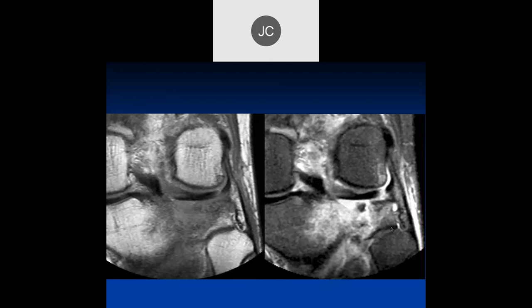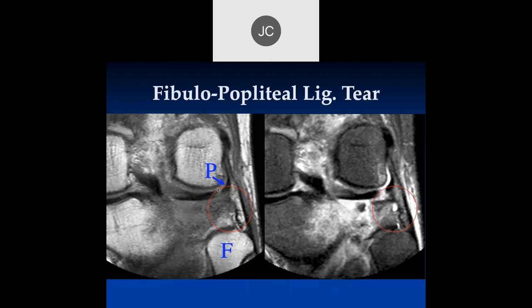Looking at the lateral tibial plateau, there's extensive edema. That's the fibula popliteus tendon — the popliteal ligament? Yes — this is actually the fibula popliteal ligament right here, which is torn. That's very hard to see, especially with all this edema in posterolateral corner syndrome. Though I used to look for the fibula popliteal ligament, studies now show it's difficult to see and whether you see it or not does not have any statistical impact on the diagnosis. Lateral collateral ligament injuries or fibular head fractures are the important structures — plus the soft tissue planes.